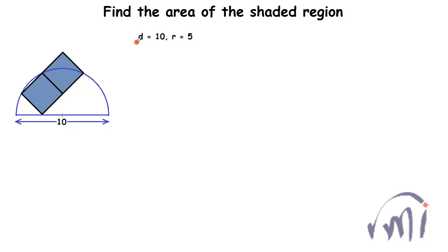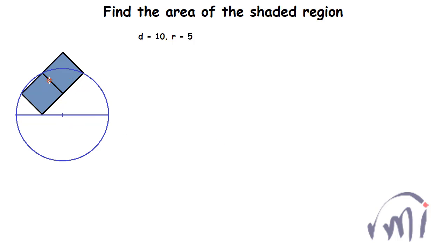I have already noted down the diameter of the semicircle as 10, so the radius of the circle will be equal to 5 units. Now what I am going to do is complete this circle, so it will look something like this, and this is the center of the circle.